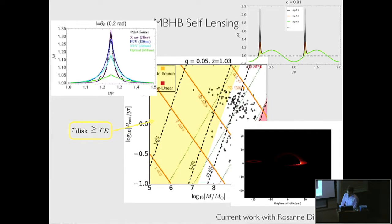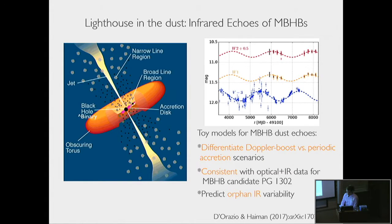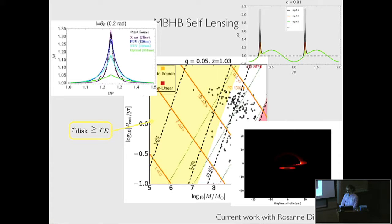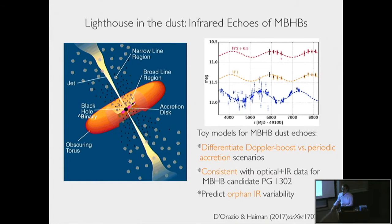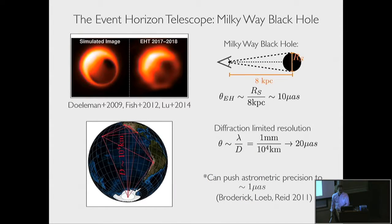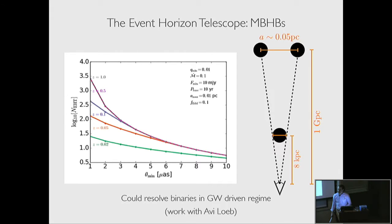We just put out a paper on the archive which talks about this periodic UV optical emission being echoed by dust surrounding the binary. We applied these models to PG-1302, using the actual IR data alongside the optical I showed earlier. We find consistent IR models that can ask whether it's Doppler boost illuminating the dust like a lighthouse, or whether it's isotropic illumination due to periodic accretion. Avi and I are also working on the possibility of imaging these binary black holes with very long baseline interferometry—stay tuned for that.